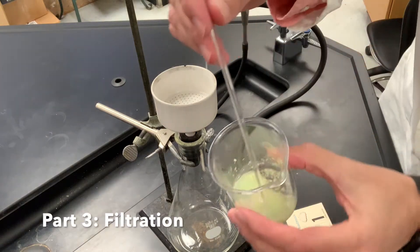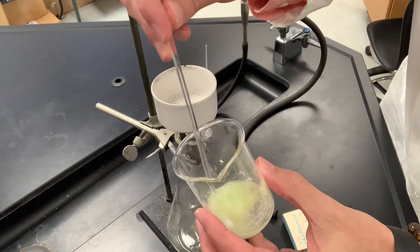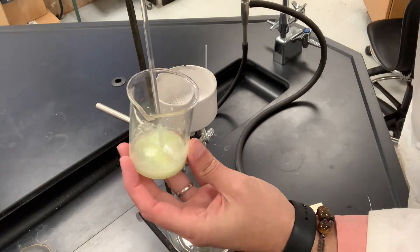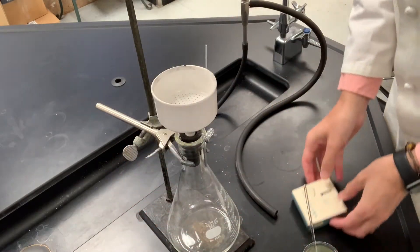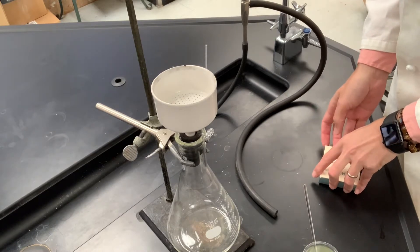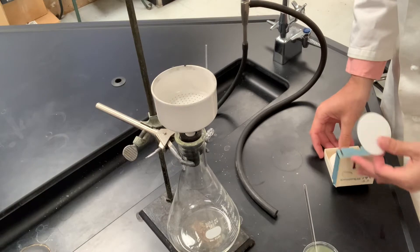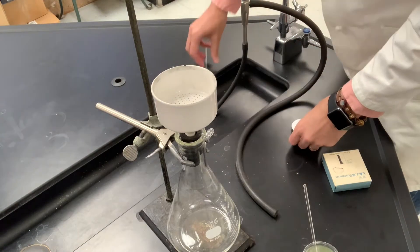Alright, we have this cold copper acetate catalyzed oxidation of benzoin reaction here and we want to filter the benzyl, which is that light yellow color. We'll take a piece of seven centimeter filter paper here and gently get some water on this to wet it, cover the holes here.